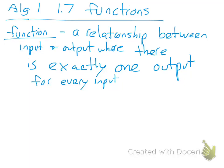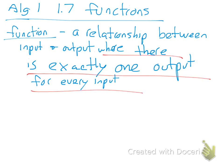Algebra 1, this is 1.7 — we're going to talk about functions. So right away: what is a function? Well, a function is just like we talked before, it's a relationship. It's got x's, it's got y's, or it's got inputs and it's got outputs. And the more exact point is that it's more than just a relationship — it's where there is exactly one output for every input.